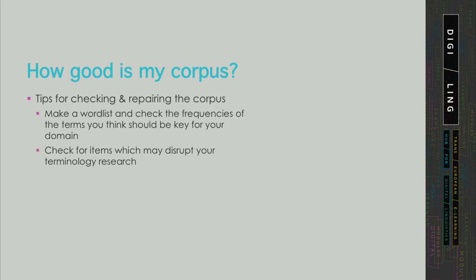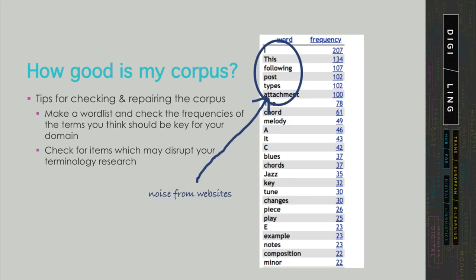Another thing is that you should check for items which may disrupt your terminology research, such as corpus noise. For example, this is a list produced when I was building a corpus of music theory using only text from the internet. This initial word list shows, first of all, that my corpus is too small — if you look at those frequencies, they are pretty low. On the other hand, having items such as 'post types' and 'attachment' on top of my list, whereas the corpus is supposed to represent music theory, probably means that my websites or texts were noisy and there is lexical inventory that I do not want. So I will have to either clean my texts or use fewer internet resources.